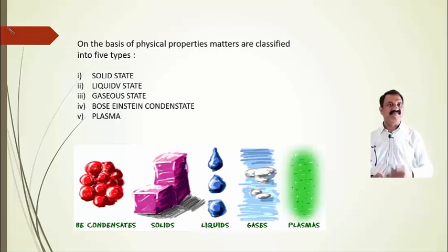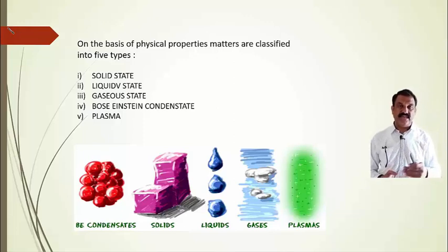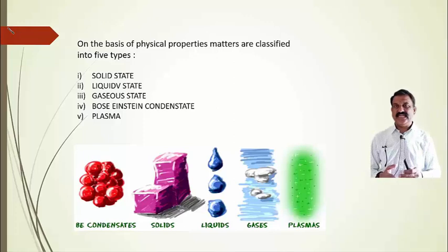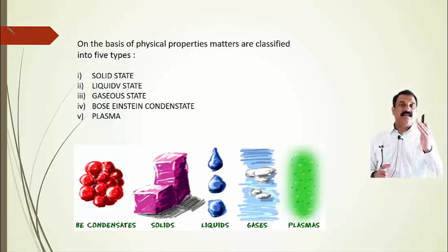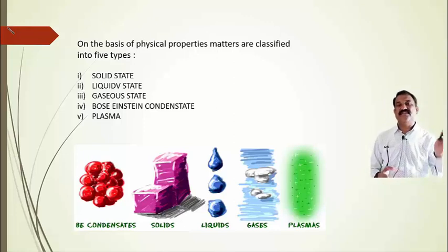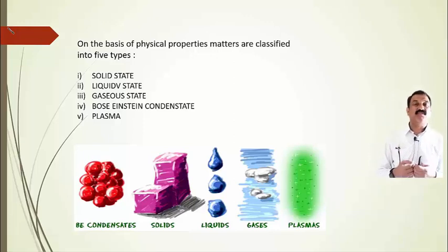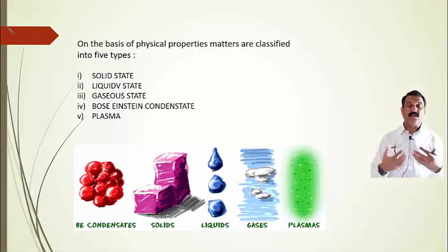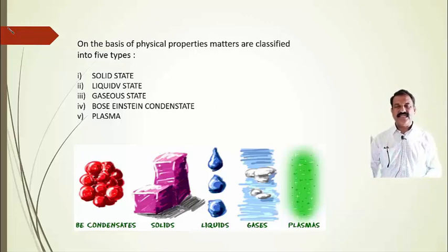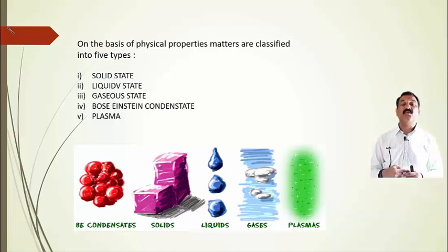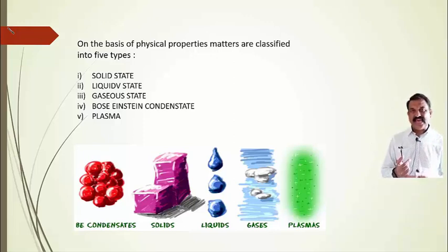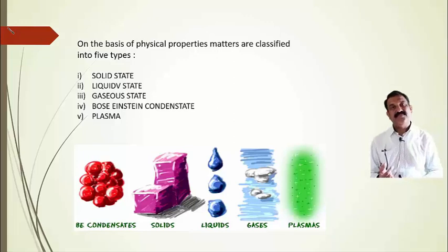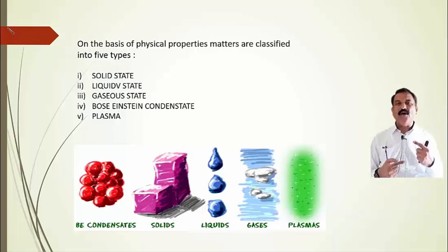We know the properties of the first three physical states well. Solid is rigid in nature — it has definite volume, definite mass, and definite shape, and intermolecular attractive forces are very strong. Liquid has a definite volume but no definite shape; intermolecular forces are less than in solids, so molecules have some freedom of movement. In the gaseous state, intermolecular attractive forces are negligible, so gas has no definite shape or volume — it acquires all available space.